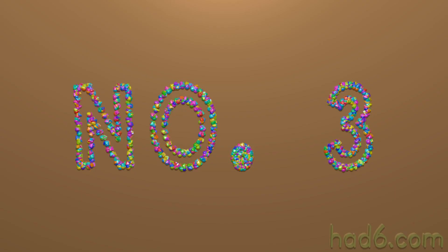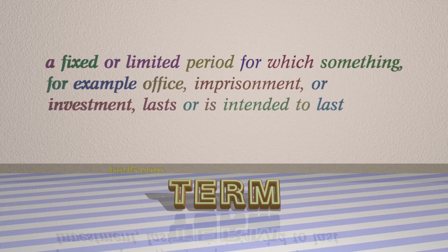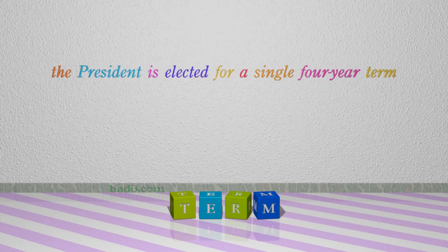Number 3: Term. Which means a fixed or limited period for which something — for example, office, imprisonment, or investment — lasts or is intended to last. For example, the president is elected for a single four-year term.